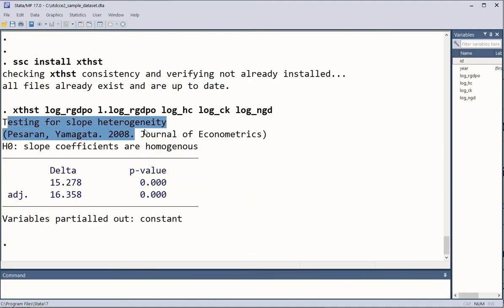This is the slope heterogeneity test given by these two individuals. This was Pesaran and Yamagata, 2008 in the journal of econometrics. You can see both of them are statistically significant. It means that we are facing a situation where the slope coefficients are heterogeneous. Because this hypothesis that is the null hypothesis has been rejected. We are facing the heterogeneity in the slope parameters.